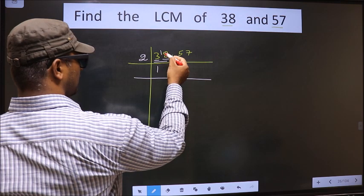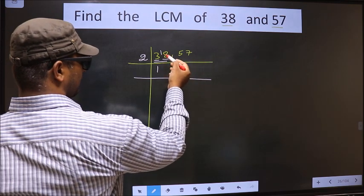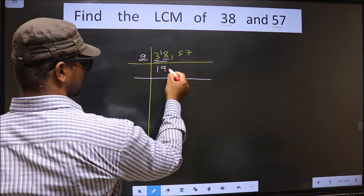3 minus 2 is 1, carried forward making it 18. When do we get 18 in the 2 table? 2 nines, 18.